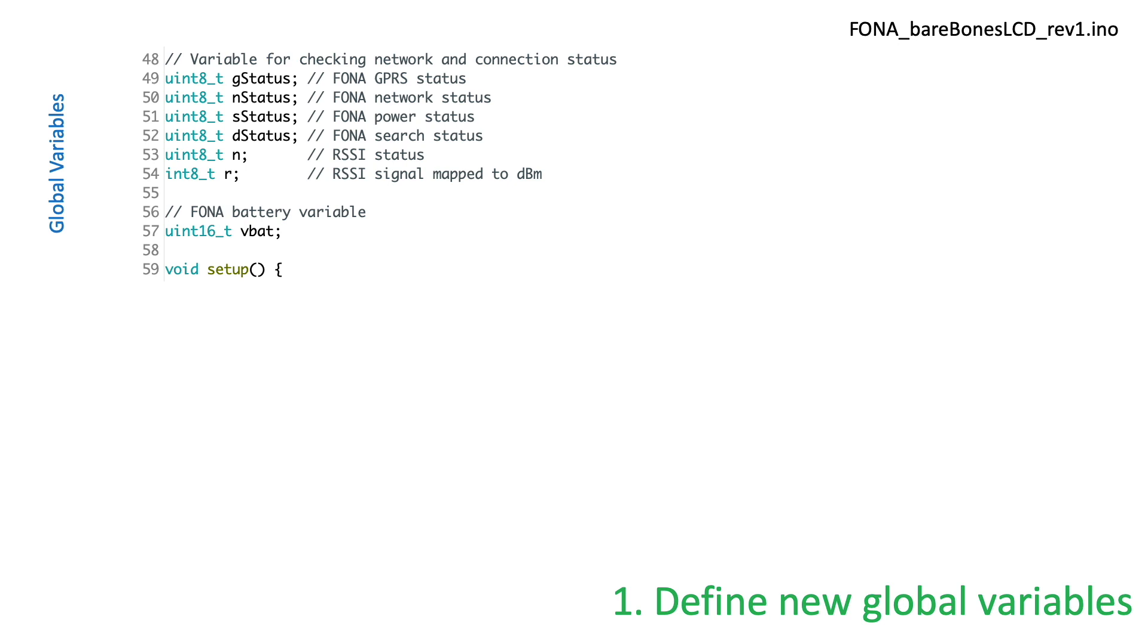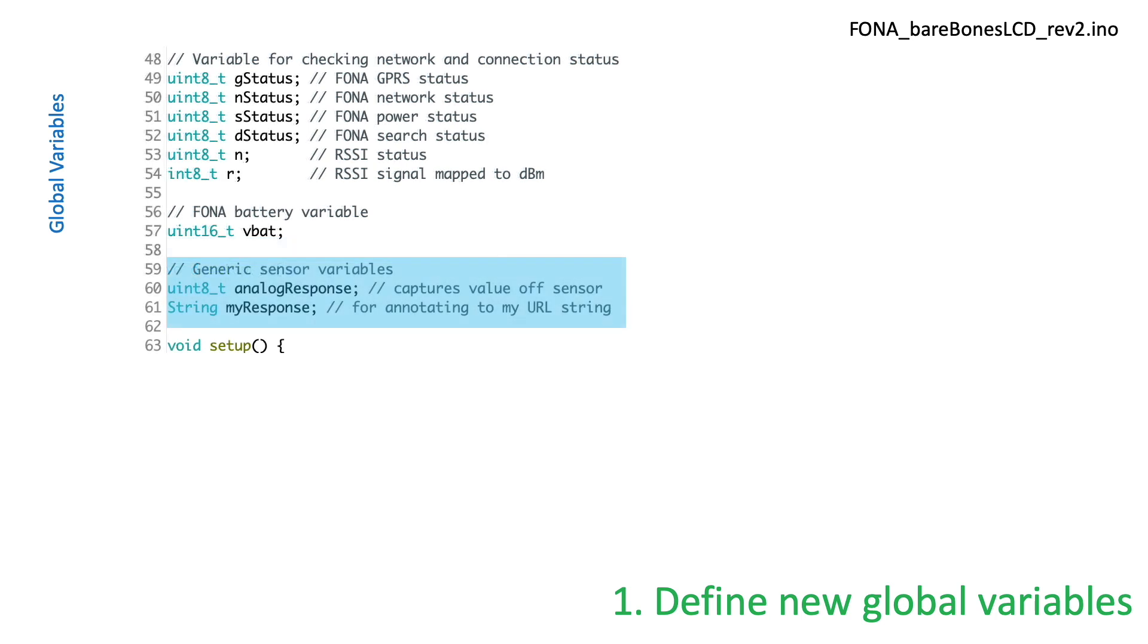These are the variables that were discussed in our prior Introduction to the Internet of Things chapter. Only now, we'll also need to add variables to capture the analog responses from our sensors. I'll highlight areas in the original code where we'll make the additions.